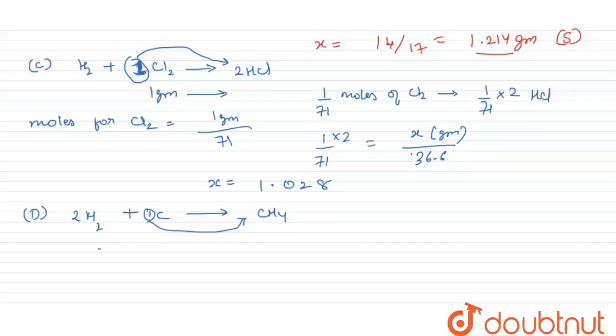So 1 gram of carbon having moles equals 1 upon mass of carbon, which is 12, so it will give 1 mole of CH4. The moles for CH4 will also be equal to 1 by 12.